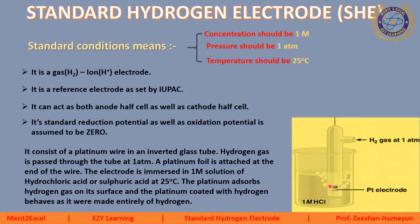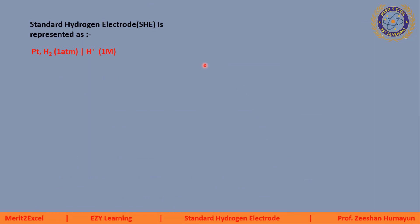Jab hum hydrogen gas pass karte hain toh hydrogen gas platinum par absorb bhi karta hai — is par jama ho jaati hai. Aur phir aisa lagta hai ke yahan par platinum hai hi nahin, balke sirf hydrogen hai. Is tarah humein yahan par hydrogen deposit ho kar mil jaati hai, aur jo yahan deposit nahin hoti woh gas ki soorat mein bahar nikal jaati hai. Standard hydrogen electrode (SHE) is represented as: Pt | H₂(g, 1 atm) | H⁺(aq, 1M). Standard hydrogen electrode is designated as E° node symbol.